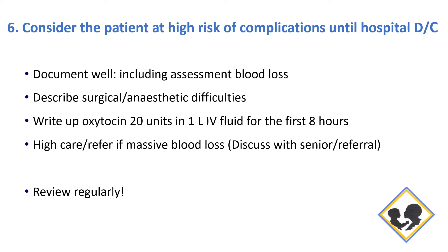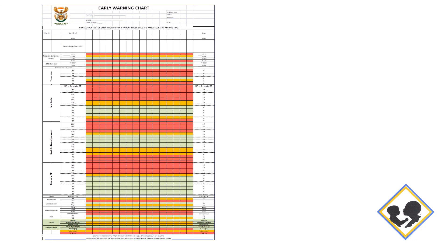If you have a high care or are able to refer, consider this after massive blood loss and discuss it with a senior or your referral center. Regular scheduled review is absolutely critical to the early detection of post-operative complications, especially bleeding. Try to schedule these visits if you can — just go past the patient and check their heart rate and blood pressure. We do have an early warning chart, but there are so many fields that you might not be called reliably, so regular review is the best way to pick up patients early.